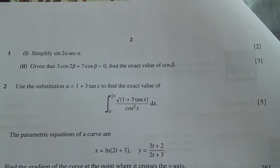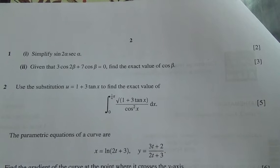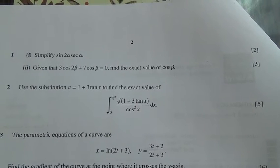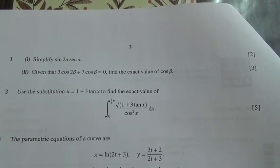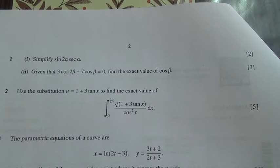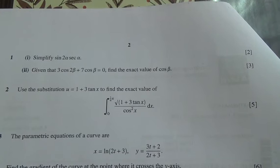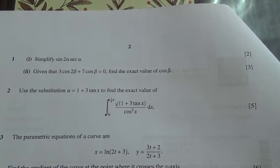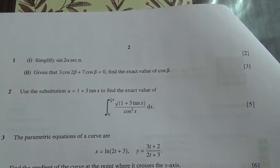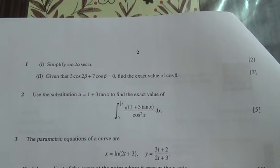Use the substitution u is equal to 1 plus 3 tan x to find the exact value of the integral of square root of 1 plus 3 tan x divided by cos square x with respect to dx, using limits from 0 to pi over 4.